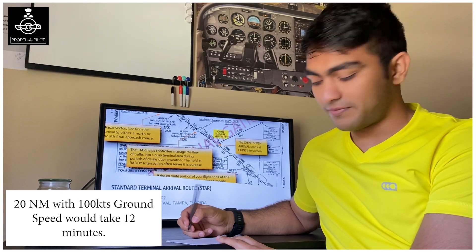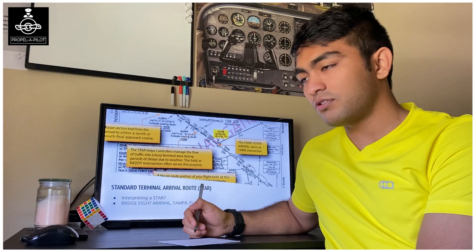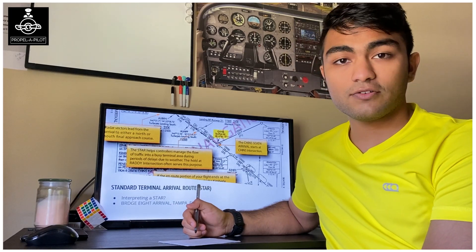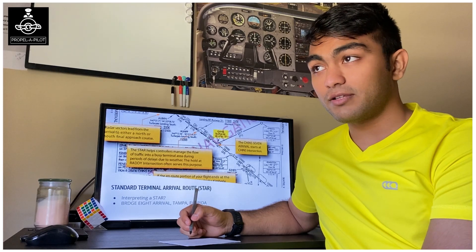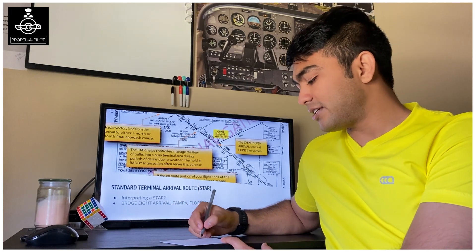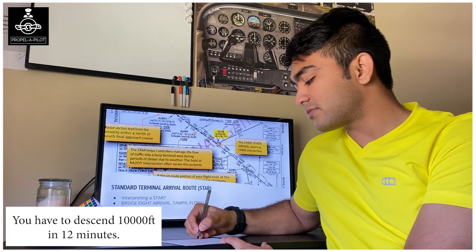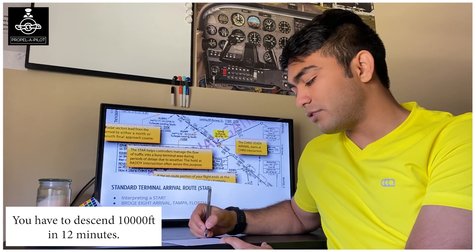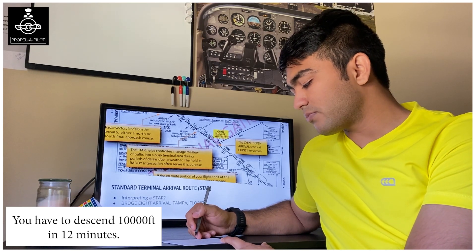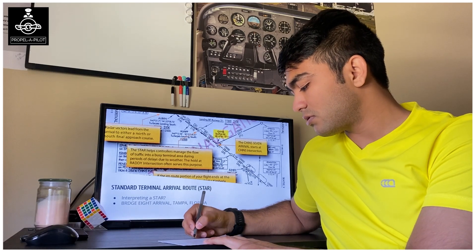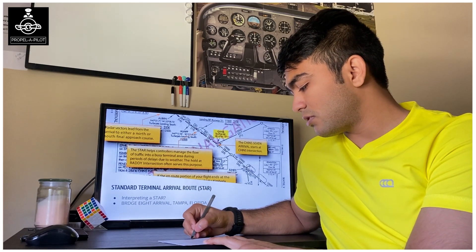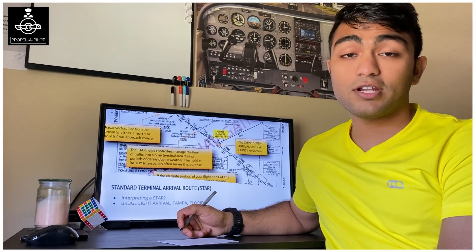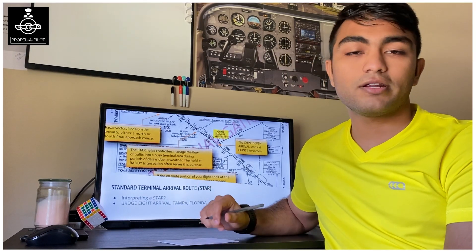Now you need to descend from 15,000 to 5,000 feet—that is exactly 10,000 feet. You have to descend 10,000 feet in 12 minutes, so divide 10,000 by 12. Dividing 10,000 by 12, you get about 833 feet per minute. So let's take 840 feet per minute for ease.